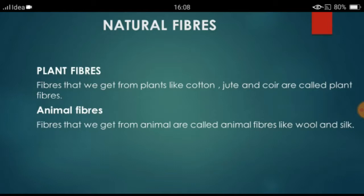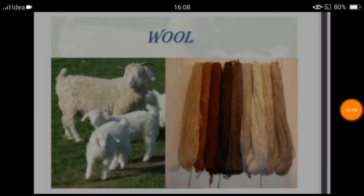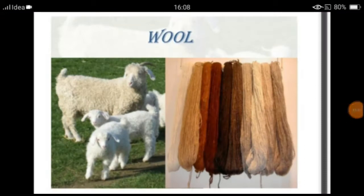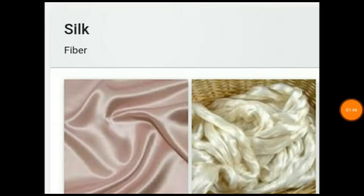Fibers which we get from animals, we call animal fibers, like wool and silk. Do you know, students, from where we get wool? Yes, we get wool from sheep. From where we get silk? Yes, we get silk from silkworm. And silk is used to make scarves, sarees, and other things.